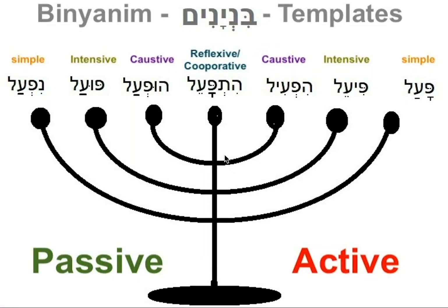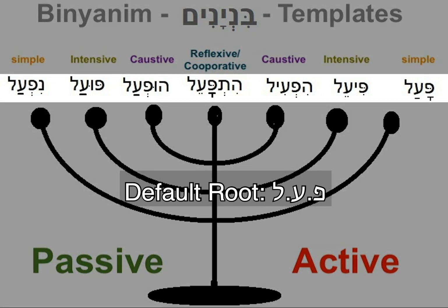The Binyanim — the templates. Take a look at the menorah. The menorah helps us understand and visualize the idea of the templates. As you can see, the names of the Binyanim have the root letters Pe, Ein, Lamed — Pa'al. This is the root that conveys the meaning of action, which is what a verb is: an action.